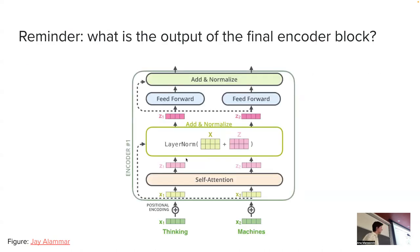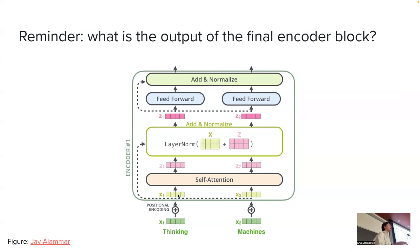Each encoder block is composed of a self-attention mechanism together with a few feed-forward layers, residual connections, and layer normalization. The important thing is to know what the output of an encoder block is. The output will be a new representation of your input token — so each token is represented with a vector, we put it into the encoder block, and we get a series of transformations that change that vector. But you also get the vector of that token contextualized with respect to other tokens in the input, given that we have used the self-attention mechanism.